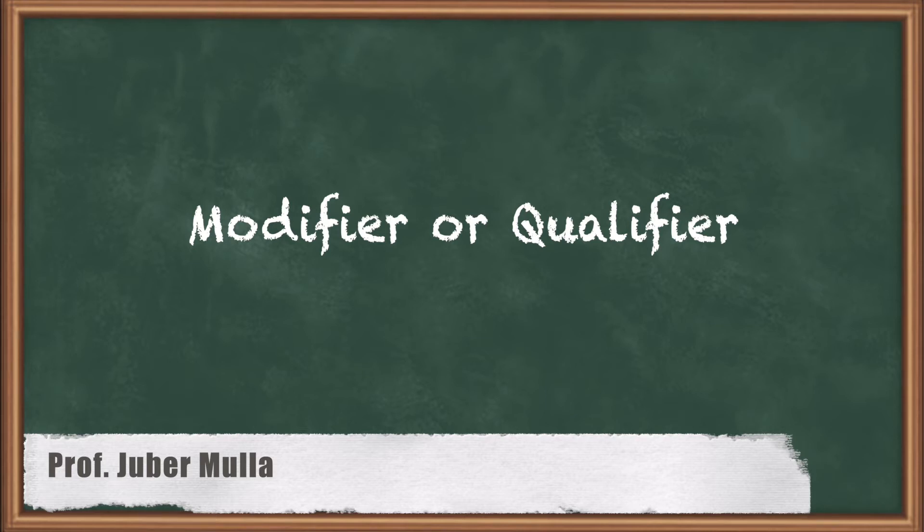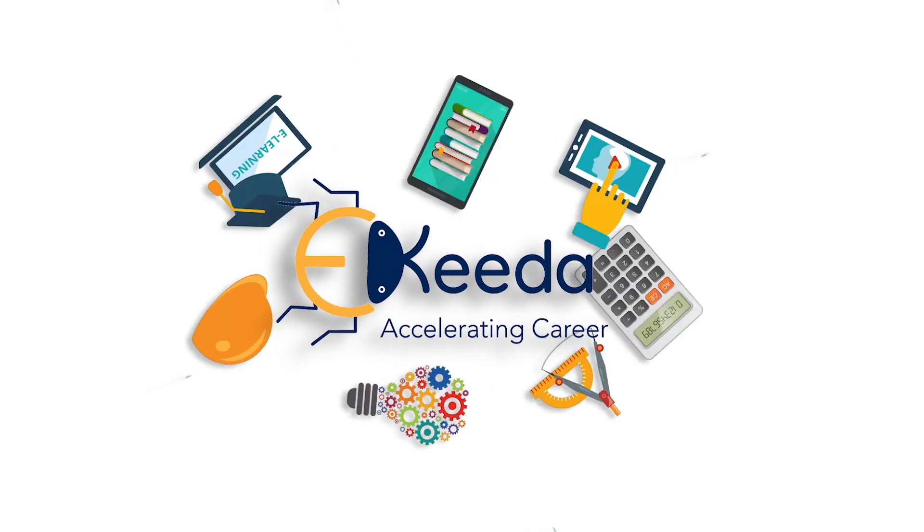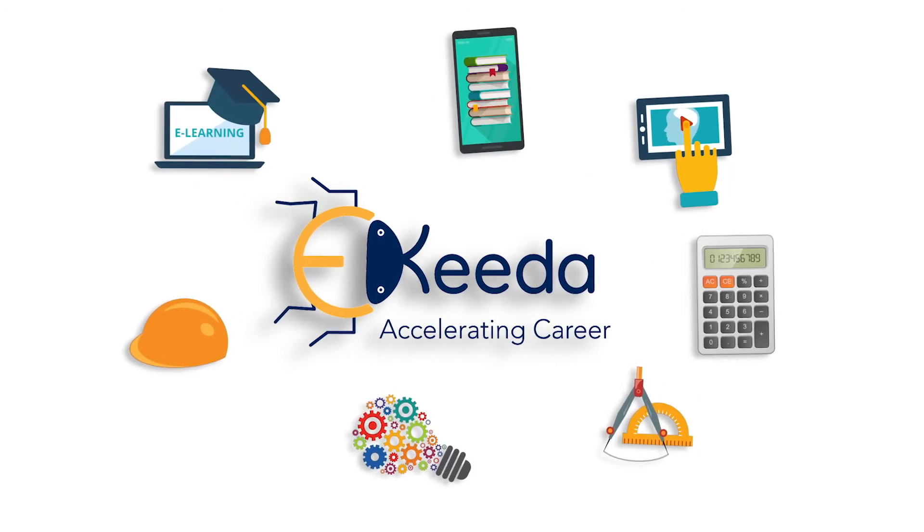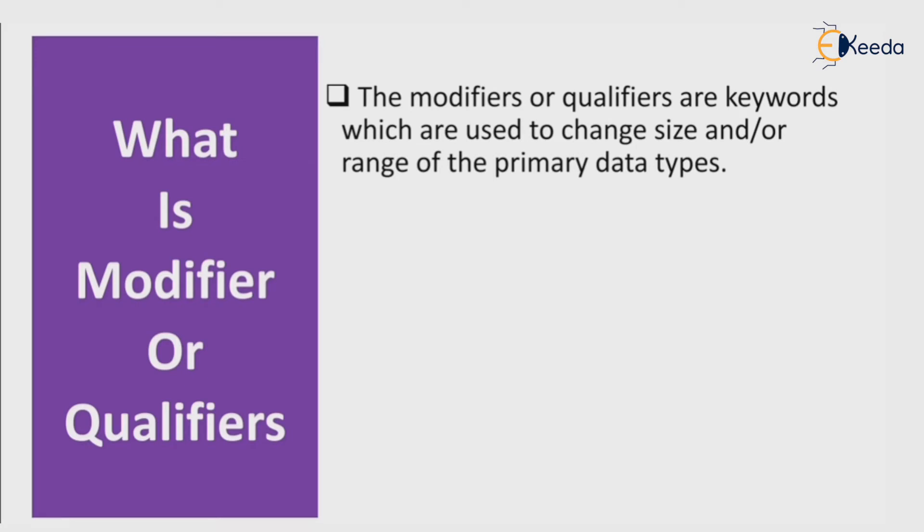Let's start with what is modifier or qualifier. The modifiers or qualifiers are keywords which are used to change size or range of primary data types.